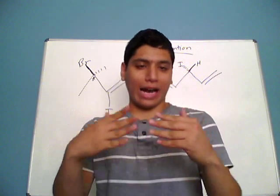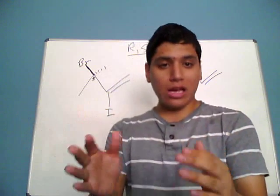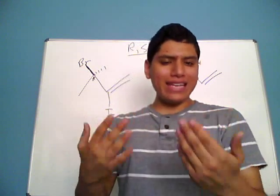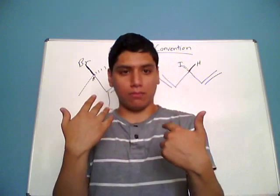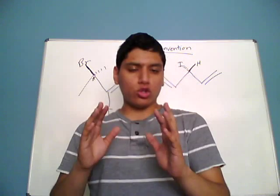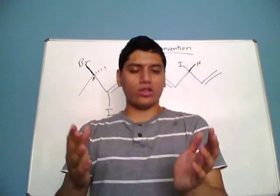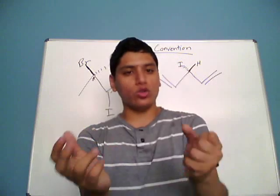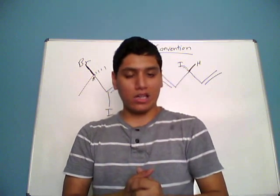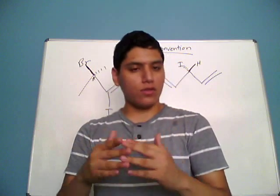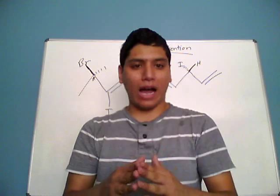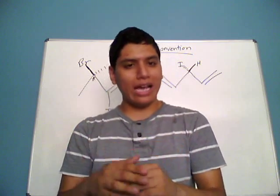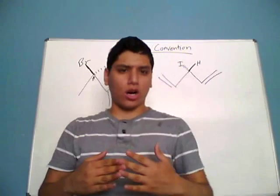Now that we've talked a little bit about chiral centers and about the priority rules, we're going to be talking about naming chiral centers either as R or S. In many lectures, professor notes, and textbooks, they use a rule where you put the lowest priority substituent in the back and treat it as a steering wheel. Instead, I'm going to talk about a different technique that I believe is simpler — the right hand rule.